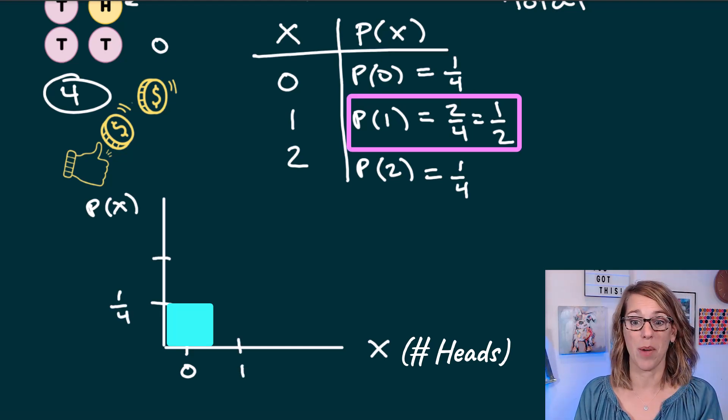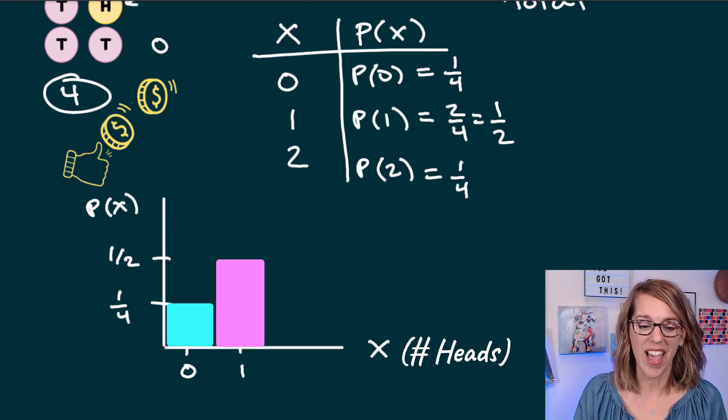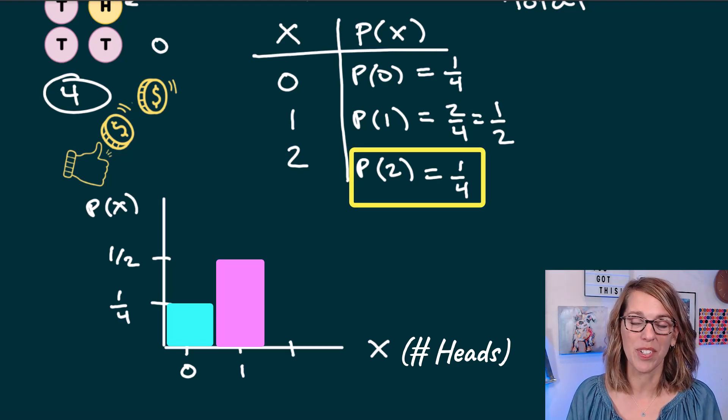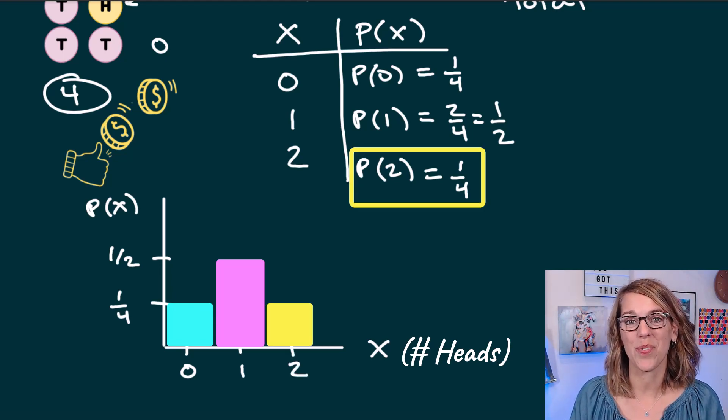When X is equal to one, that height, which is that probability, is two fourths or a one half. And at two, when X is equal to two, that probability or height is again equal to one fourth.